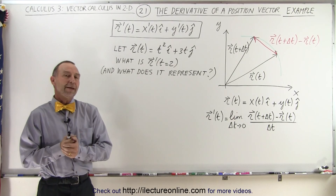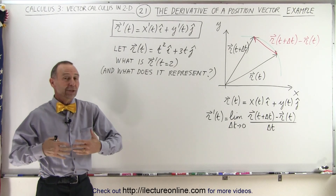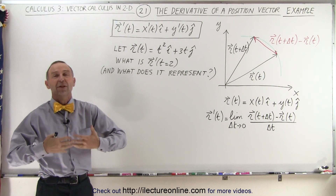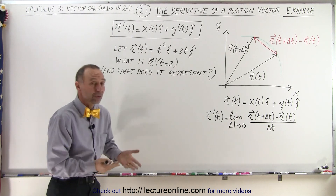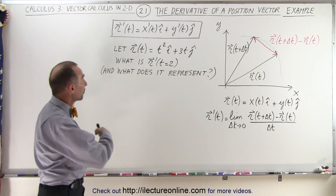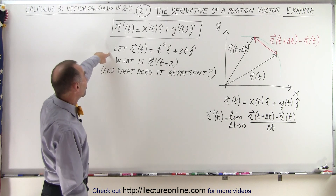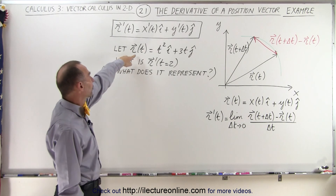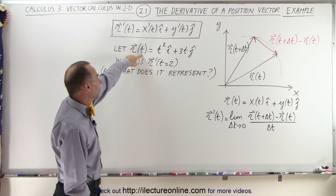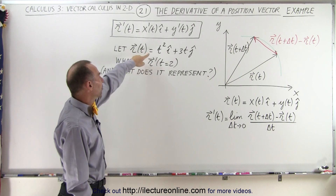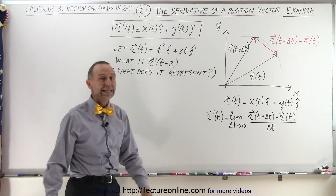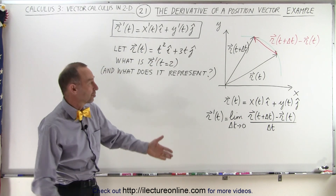Welcome to ElectronLine. Nothing like a good example to show you how the theory actually works. What we're going to do here is take the derivative of a position vector when the position vector is defined as follows: R as a function of the parametric variable t is equal to t squared in the i direction plus 3t in the j direction.